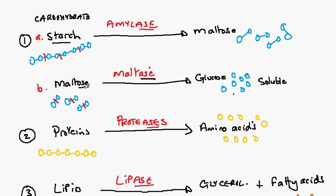Maltose is actually a soluble molecule also. Notice that amylase and maltase end in the letters A-S-E. This indicates to us that this is the name of an enzyme.